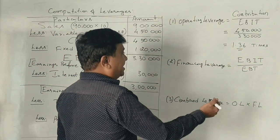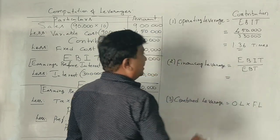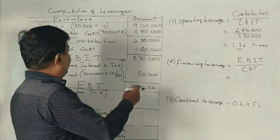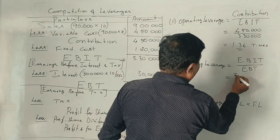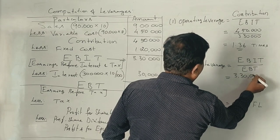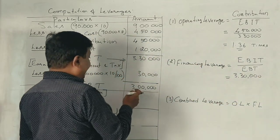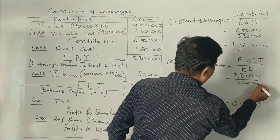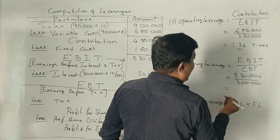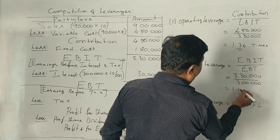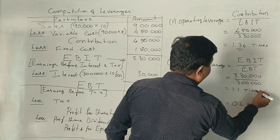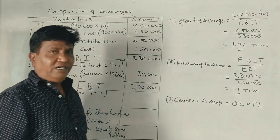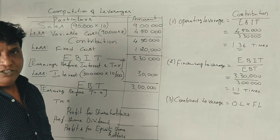Next is financial leverage. The EBIT is Rs. 3,30,000 and EBT is Rs. 3,00,000. Dividing these gives us 1.1 times. We got the financial leverage.